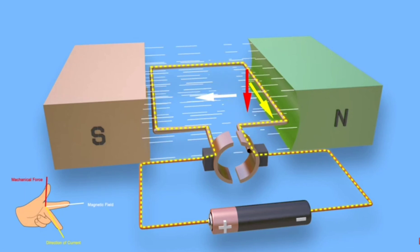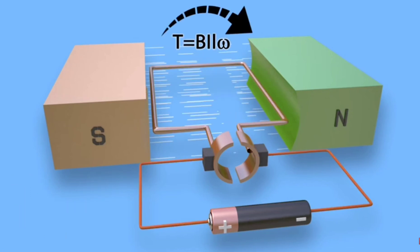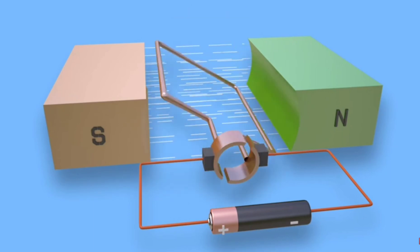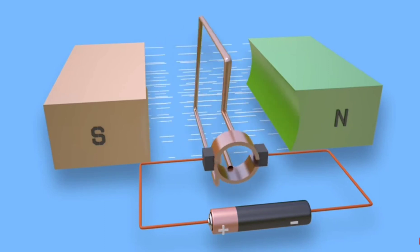Due to these upward and downward forces, the turn tends to rotate in a clockwise direction. From this explanation, we can come to the conclusion that whichever conductor comes near the south pole experiences upward mechanical force.